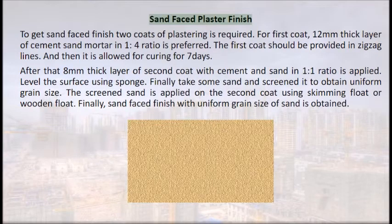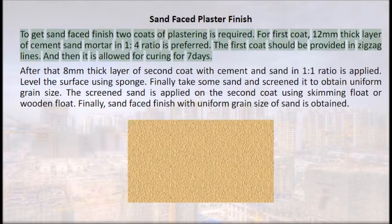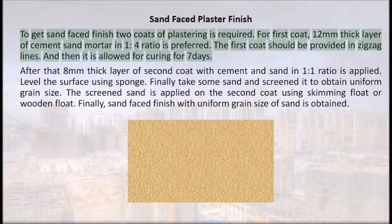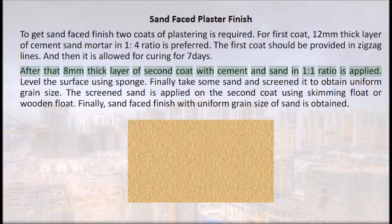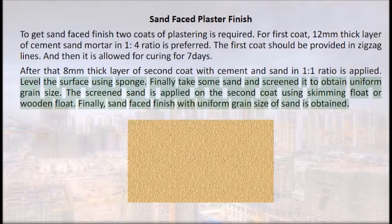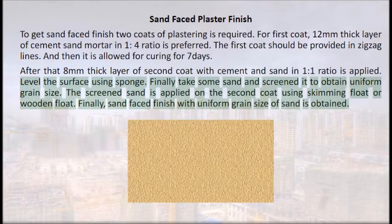Sand faced finish requires two coats. For the first coat, a 12 mm thick layer of cement-sand mortar in 1:4 ratio is applied in zigzag lines and cured for 7 days. Then an 8 mm thick second coat with cement and sand in 1:1 ratio is applied. The surface is levelled using a sponge, and screened sand of uniform grain size is applied on the second coat using a skimming or wooden float, resulting in a sand faced finish with uniform grain size.